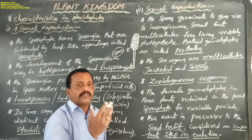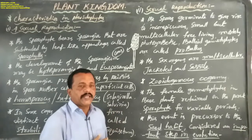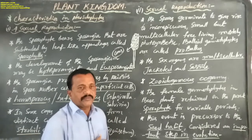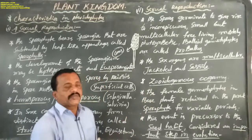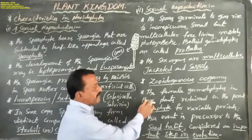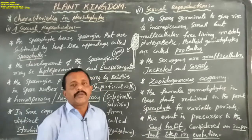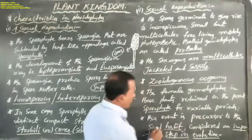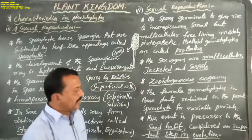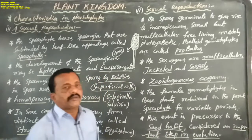In general, the male gamete fuses with the female gametophyte's egg cell, but here the female gametophyte in these plants is retained on the parent sporophyte for variable periods. This event is a precursor to the seed habit and is considered an important step in evolution.